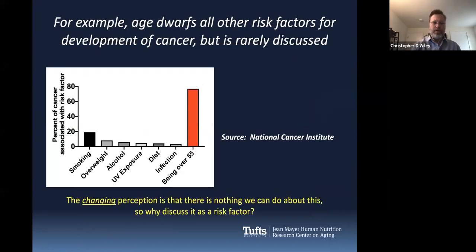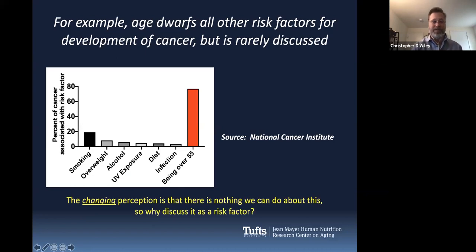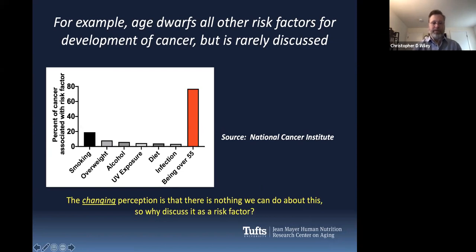An example of this is cancer. We know that there are many risk factors such as smoking and obesity and alcoholism that are known to drive cancer. These are very important factors. For example, stopping smoking is the number one thing you can do right now to keep yourself from getting cancer. But just being over the age of 55 increases your risks more than all these factors together. The reason we don't typically talk about that is that the perception was there's really nothing you can do about getting older. And I think that perception is now changing.